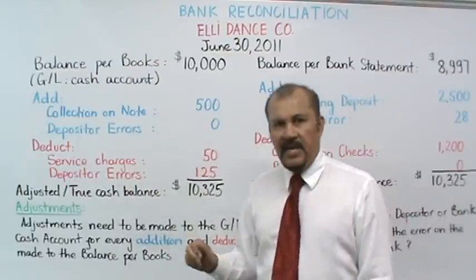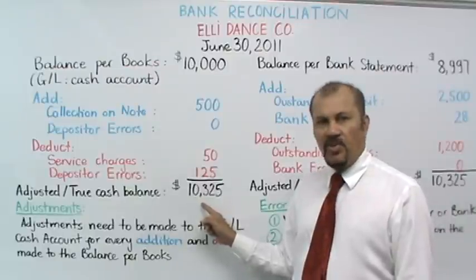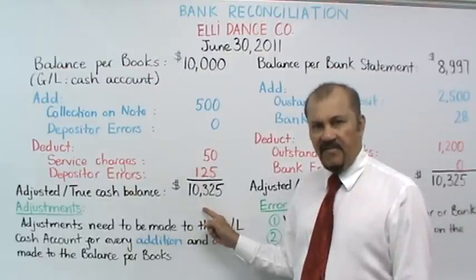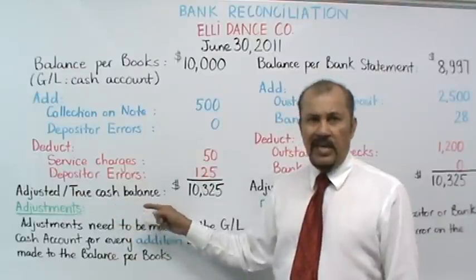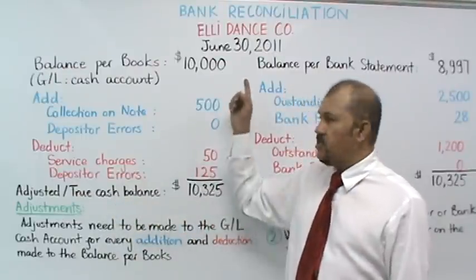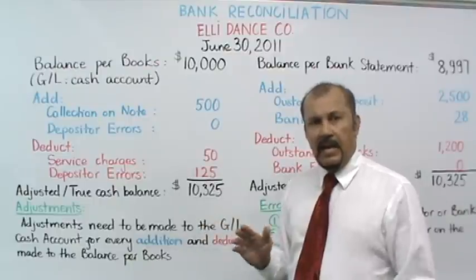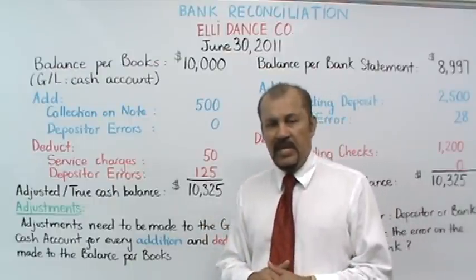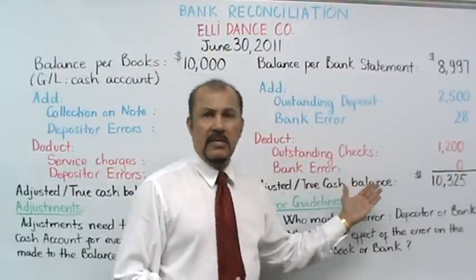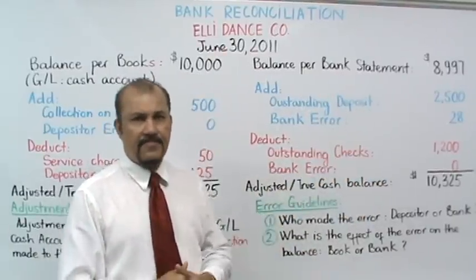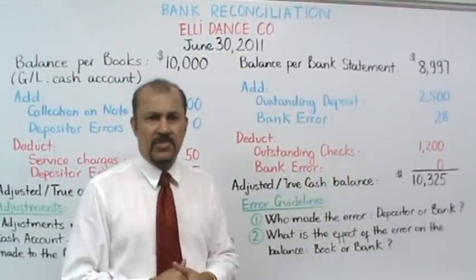So we go through the math and we end up with an adjusted cash balance of $10,325. This is also what I refer to as our true cash balance. Ellie's true cash balance as of June 30th is $10,325. However, we're not done with the reconciliation yet — we need to verify this number by making some adjustments to the bank statement balance, and we should end up with the same $10,325 again.